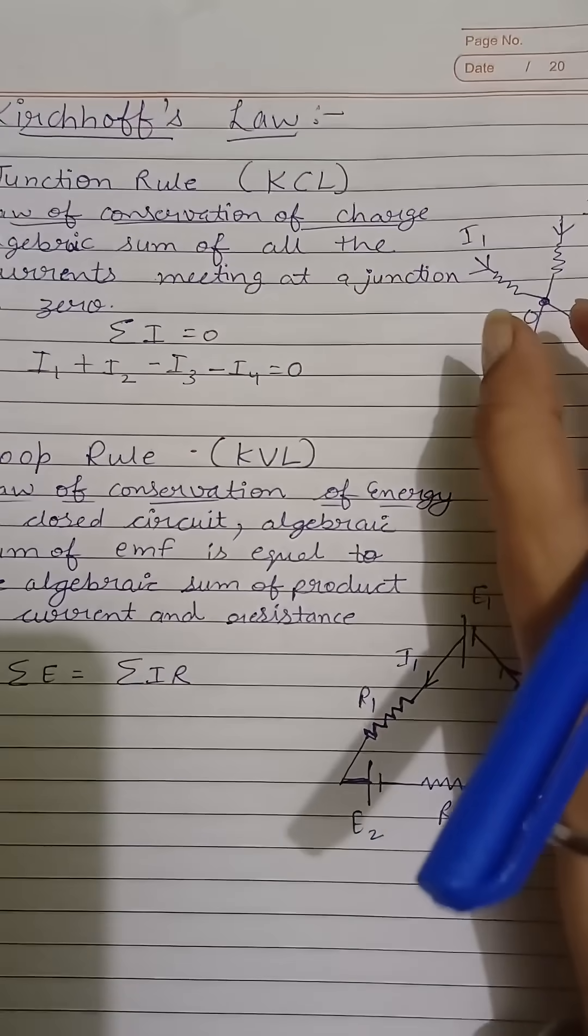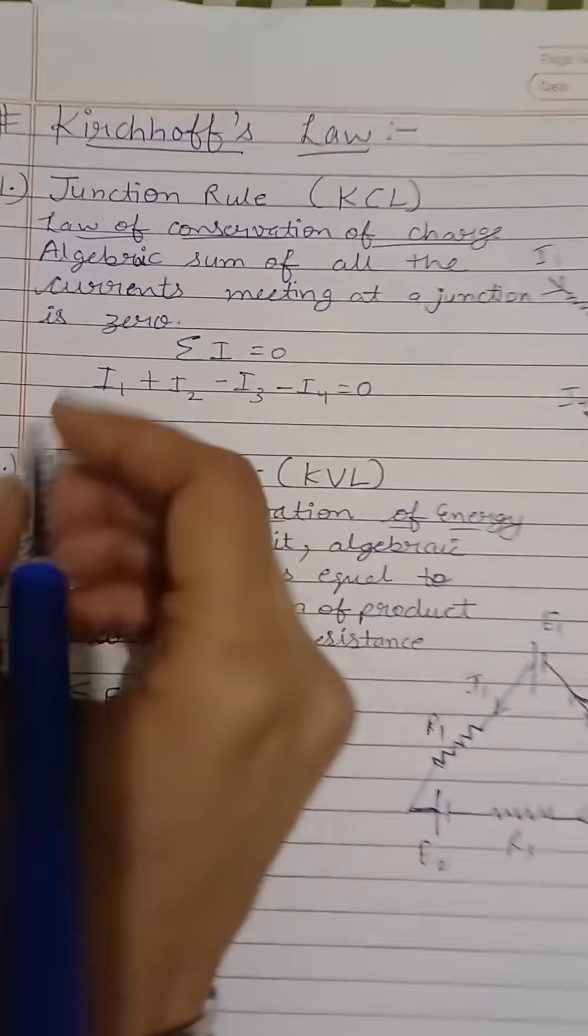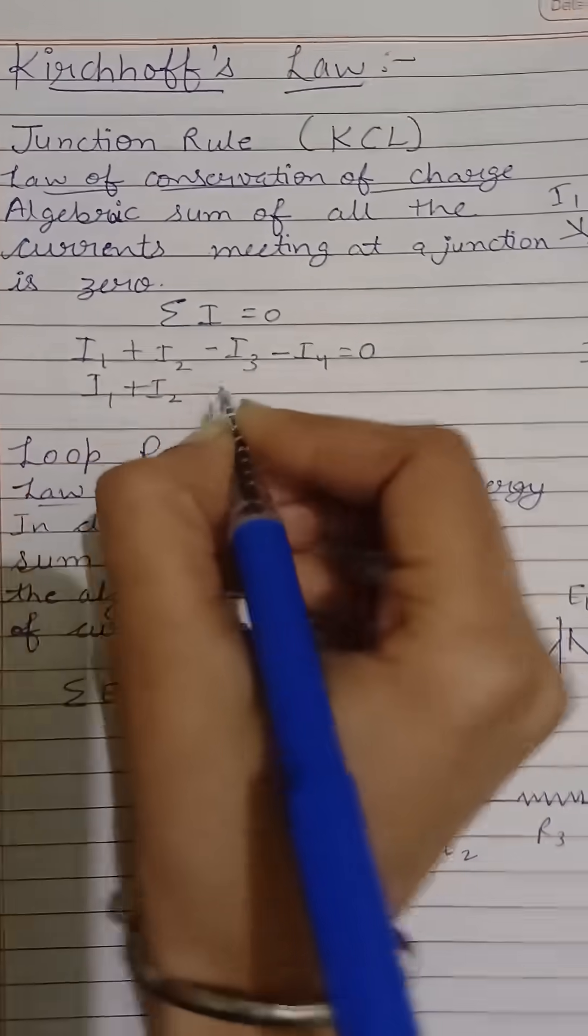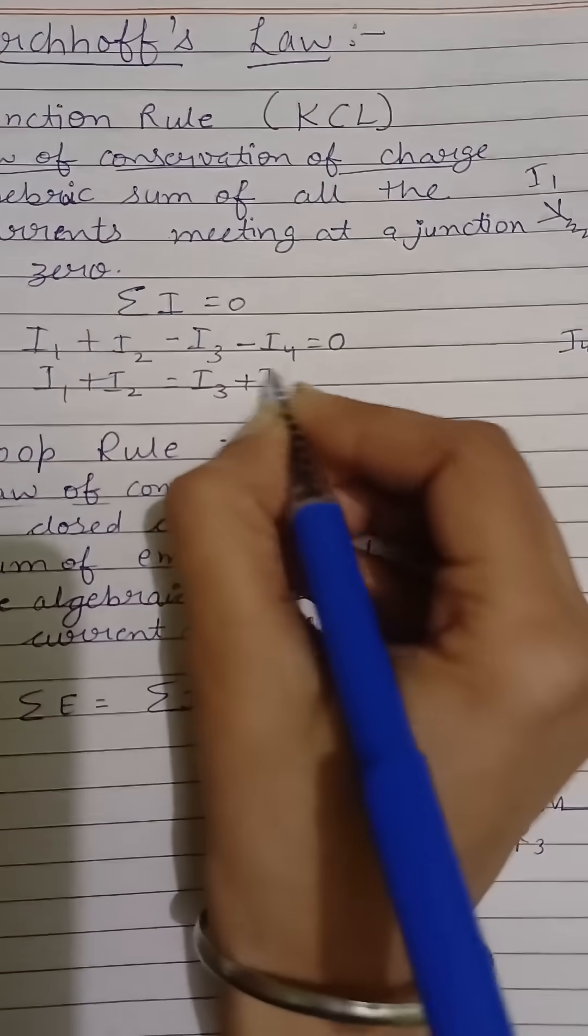According to this law, the amount of current entering the junction equals the amount leaving. So I1 plus I2 equals I3 plus I4.